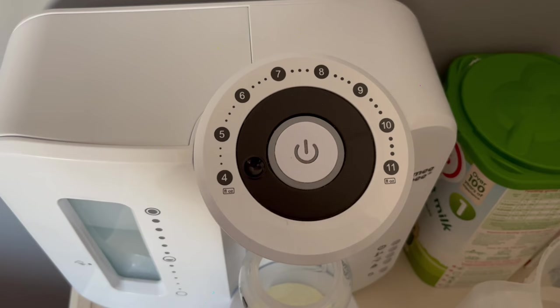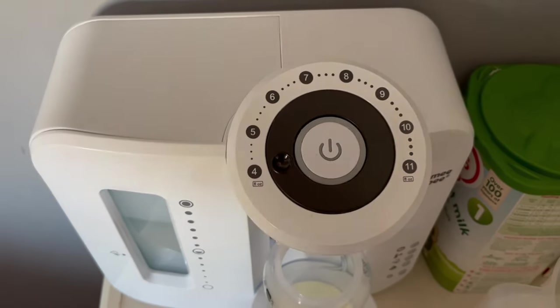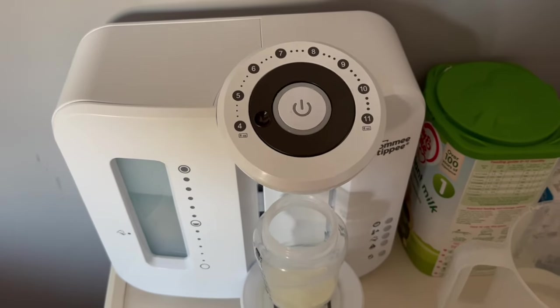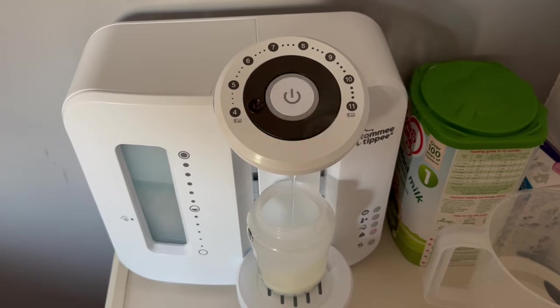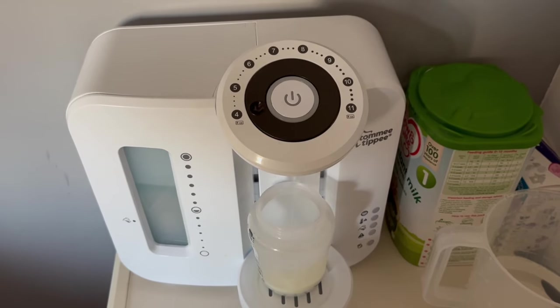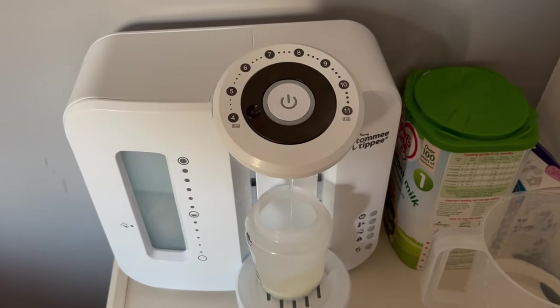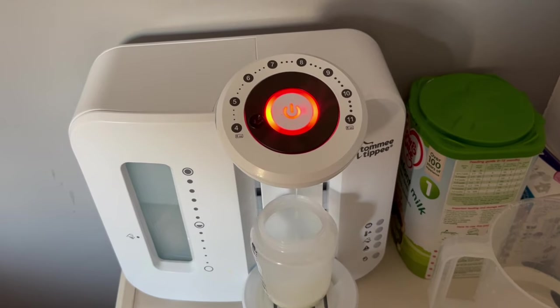Once you've chosen how many ounces you want, you just want to press the button in the middle. You can see here that the button has gone red and it's flashing. The machine is making a loud noise and it's steaming, and that means that it is dispensing some hot water because the powder needs hot water to kill the bacteria that's in it.